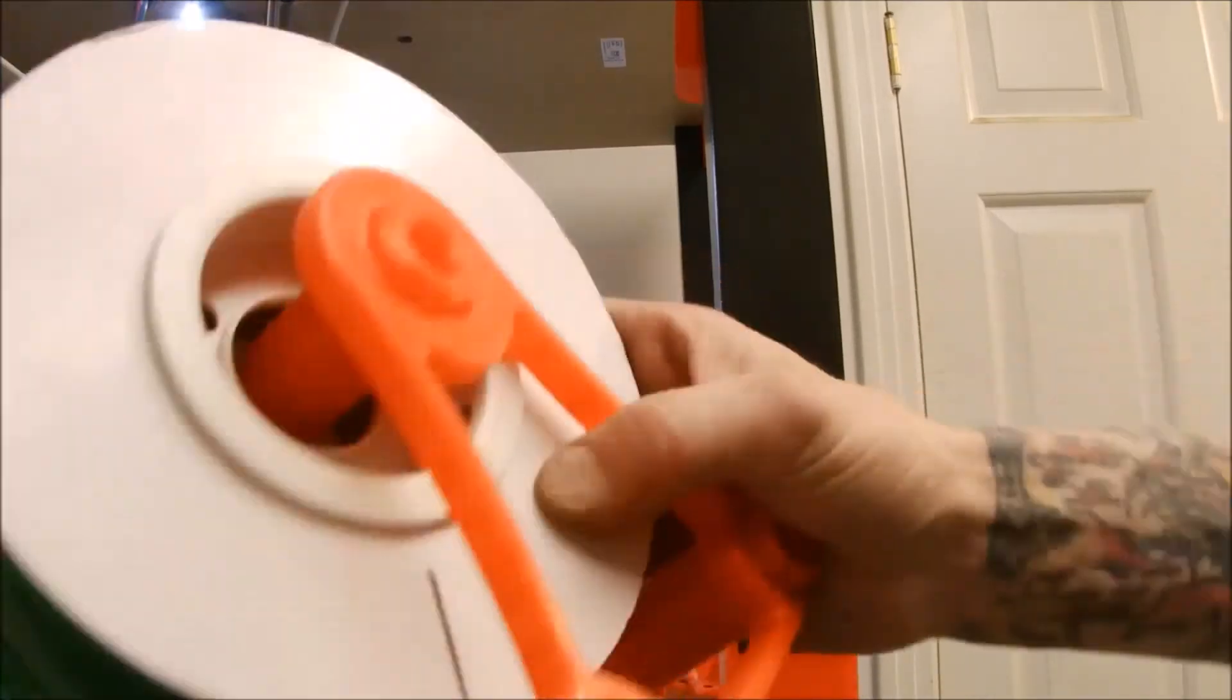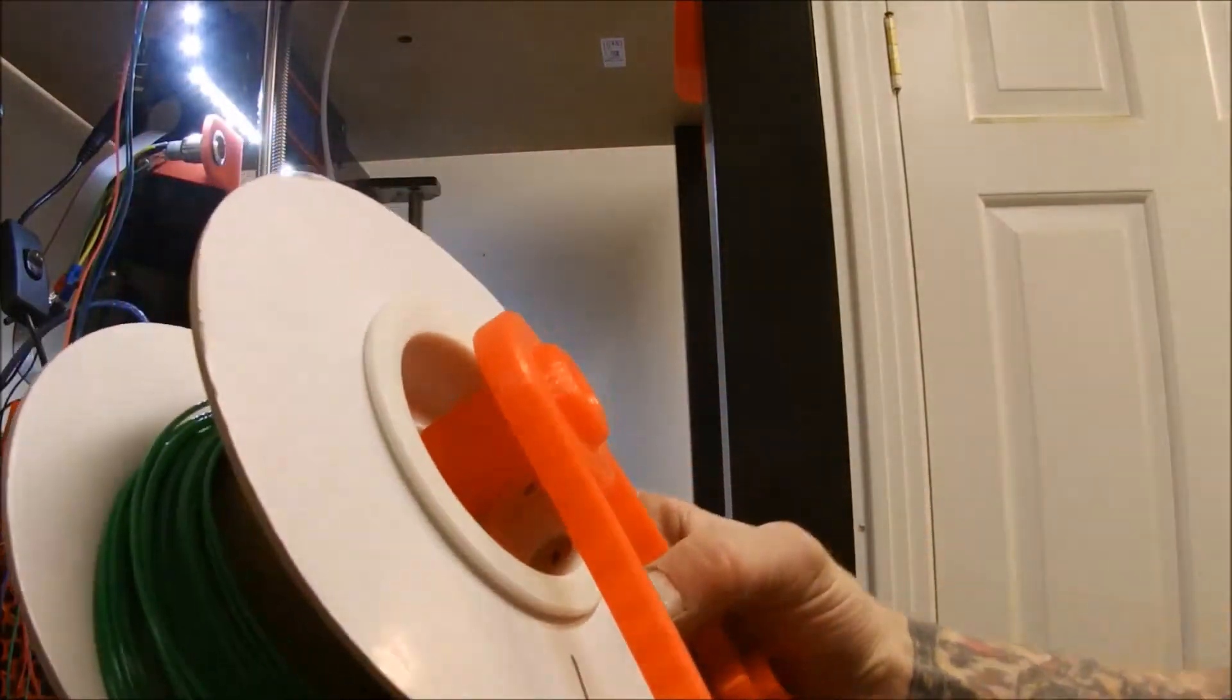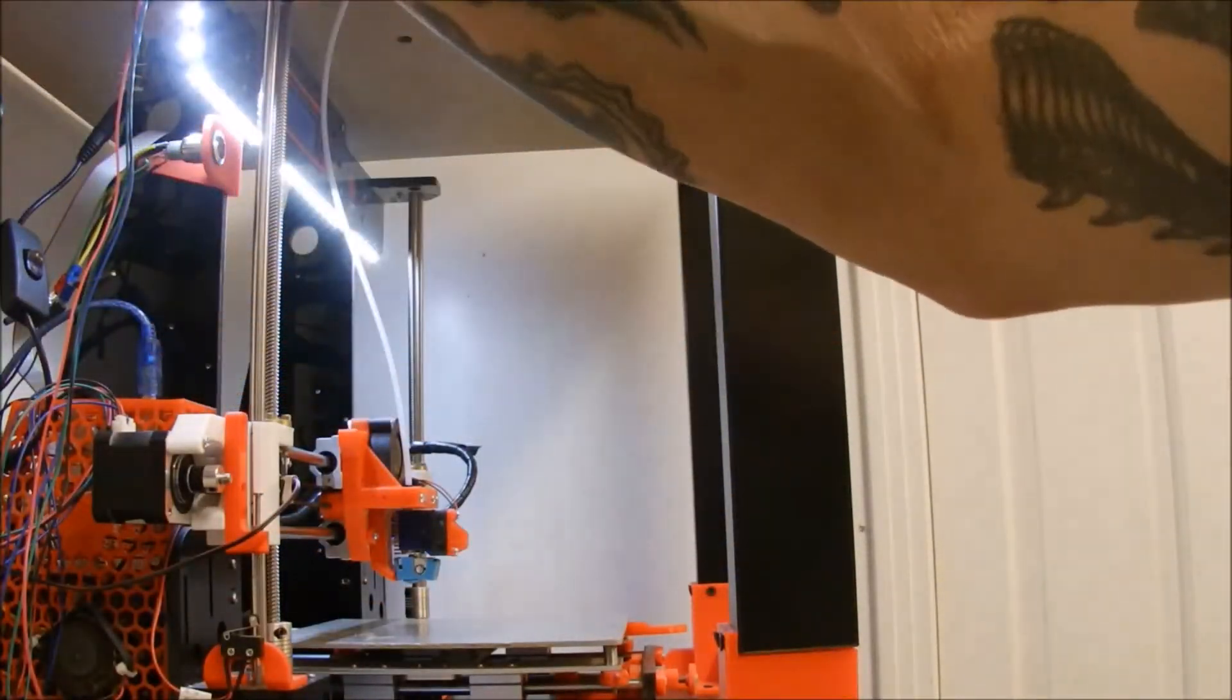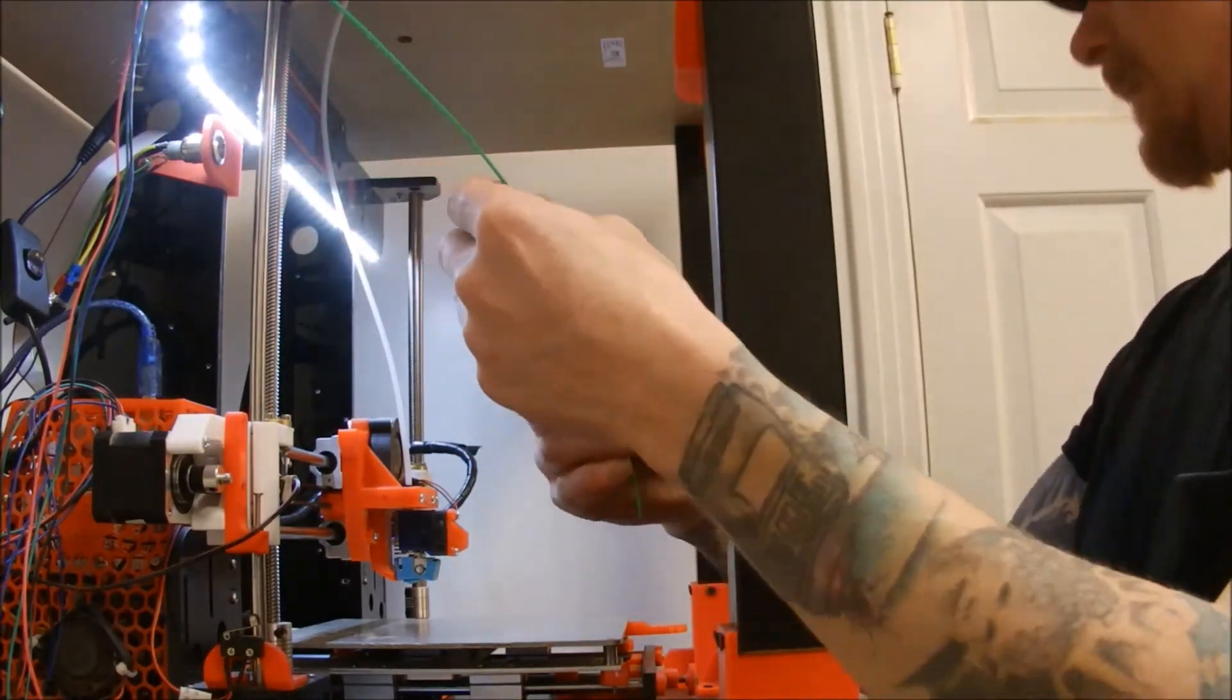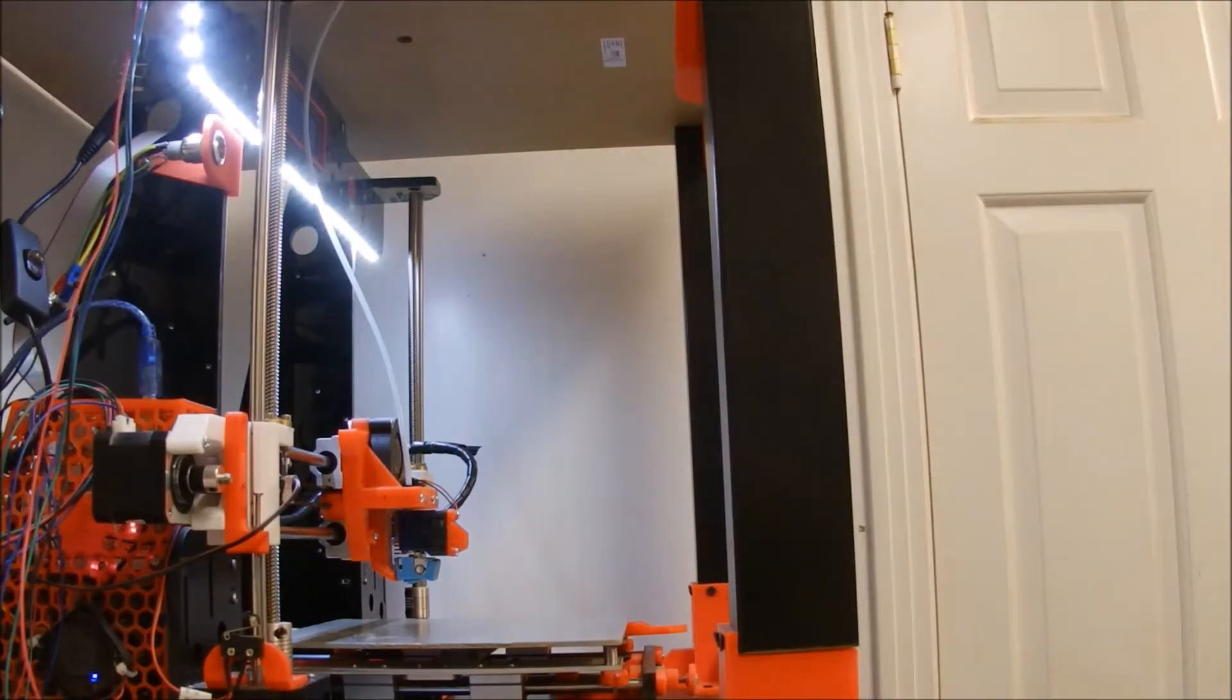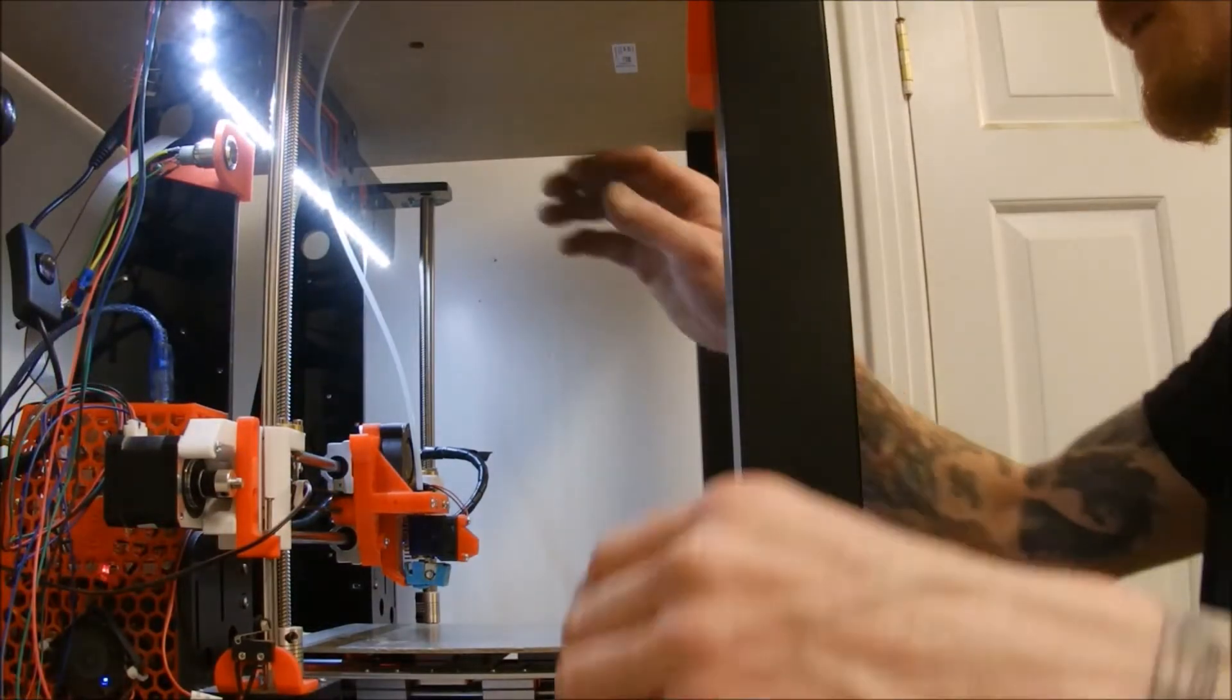All right, there you have it, one Maker's Box sample on a roll. So we're going to load this up and try this, see if this nozzle is still clogged before I can move forward with prints. Got to let this warm up. All right, this thing's all warmed up.